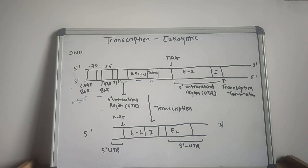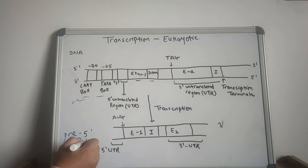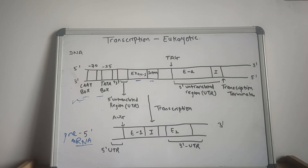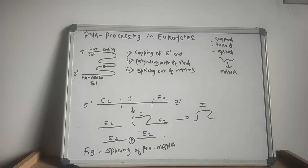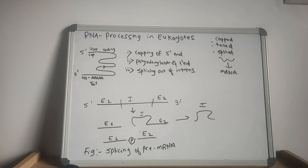Now let us discuss the processing of the eukaryotic pre-messenger RNA. The pre-mRNA needs to undergo a series of transformations known as RNA processing before the formation of the mature mRNA. The initial processing steps are: capping of the 5' end, polyadenylation of the 3' end, and splicing out of the introns.